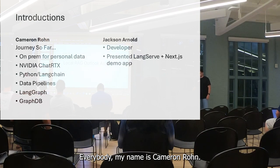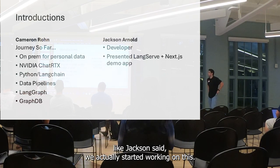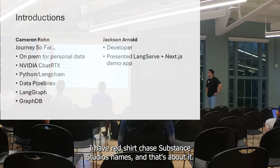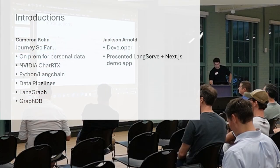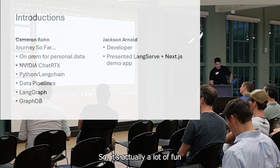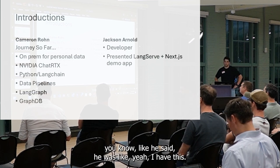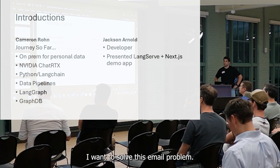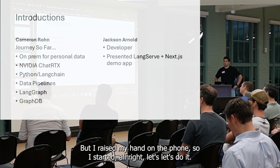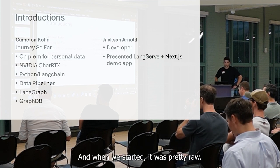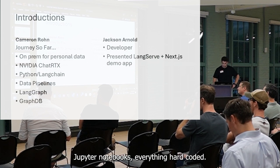My name's Cameron Rowe. Jackson and I actually started working on this having just shaken each other's hands and known each other's names — that's about it. So it's actually a lot of fun getting to know each other and learning along the way. Like he said, I have this email problem I want to solve. I raised my hand on the call and said I'd started on that — let's do it. And when we started, it was pretty rough: Jupyter notebooks, everything hard coded, very messy.